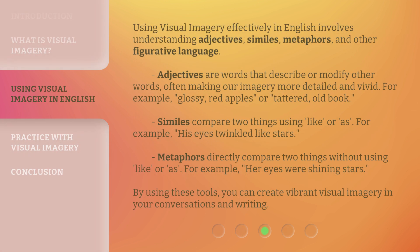Using visual imagery effectively in English involves understanding adjectives, similes, metaphors, and other figurative language. Adjectives are words that describe or modify other words, often making our imagery more detailed and vivid — for example, 'glossy red apples' or 'tattered old book.' Similes compare two things using 'like' or 'as' — for example, 'his eyes twinkled like stars.' Metaphors directly compare two things without using 'like' or 'as' — for example, 'her eyes were shining stars.' By using these tools, you can create vibrant visual imagery in your conversations and writing.